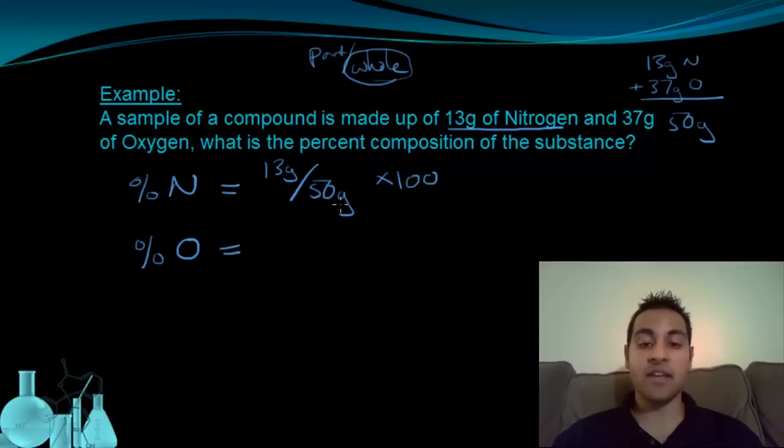For oxygen, I can set it up the same way, except the part that's oxygen is 37 grams of oxygen, so I have 37 grams. Out of, again, the total is still the same, 50 grams is the total for this substance. And I multiply this by 100 as well to convert it to a percentage.